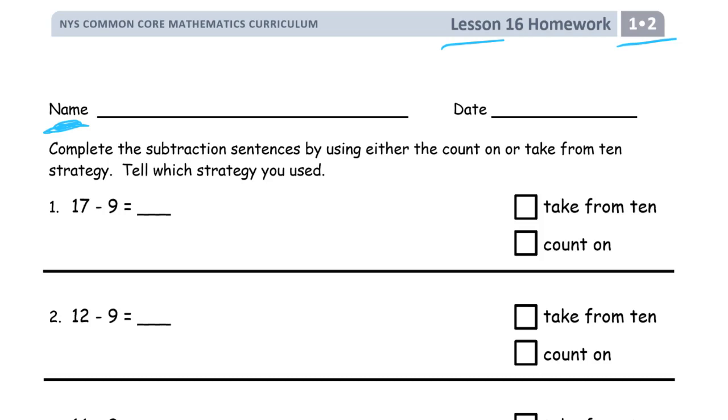Let's look at, for instance, here's number 1. We're looking at 17 minus 9. Now, 17 and 9 are not close together. So counting on is going to be a little more work here. But 9 is really close to 10. So I know the take from 10 strategy says I'm going to have 1.